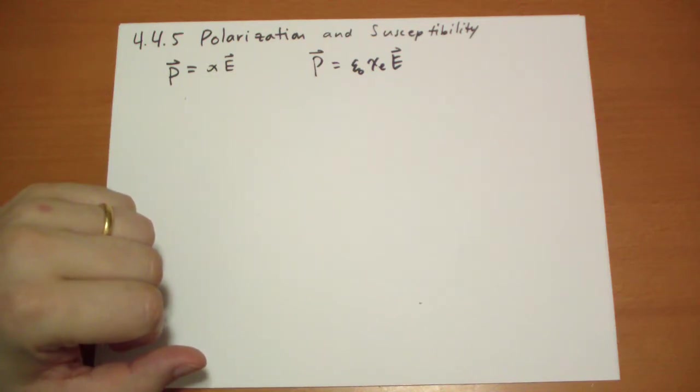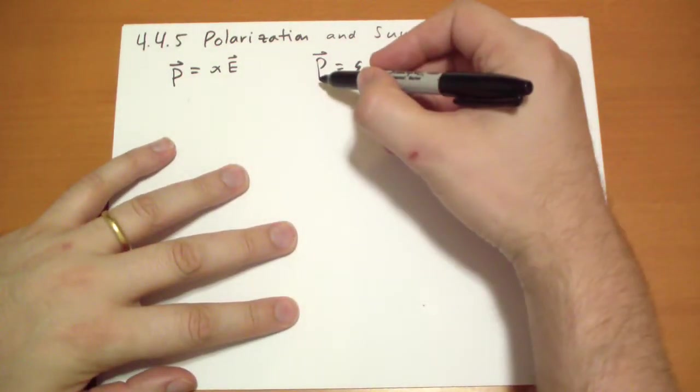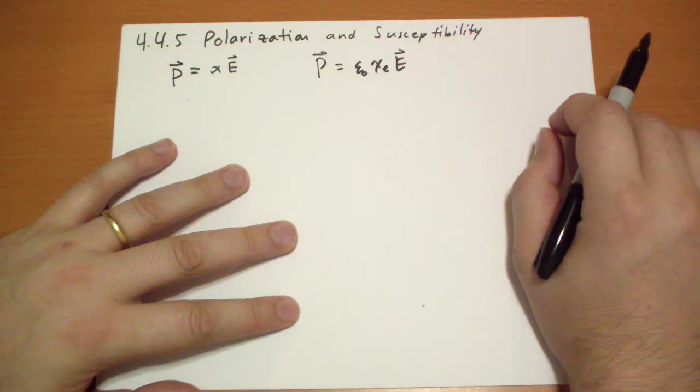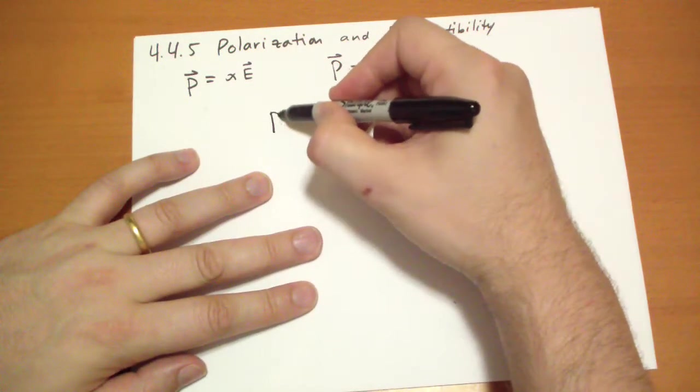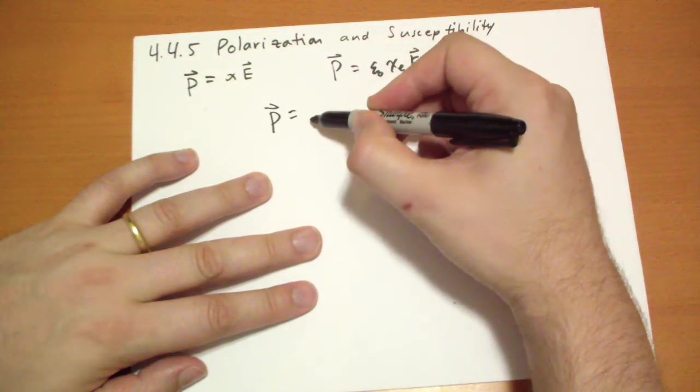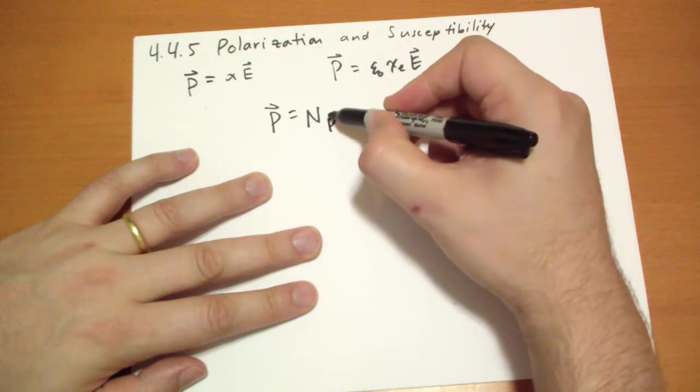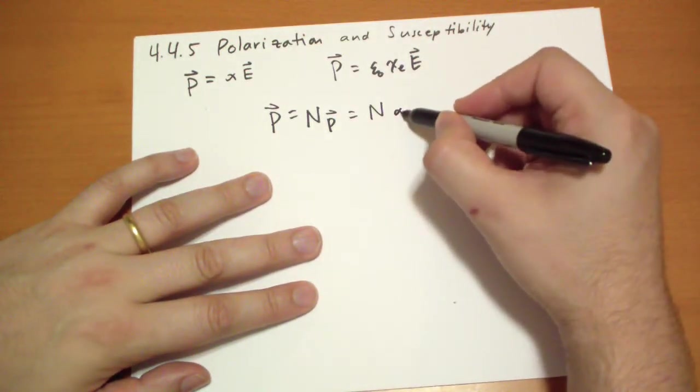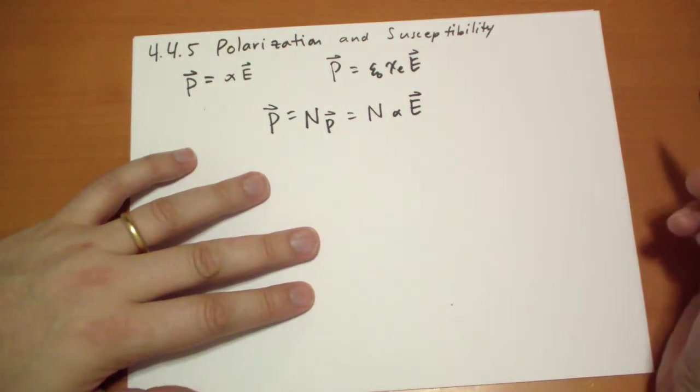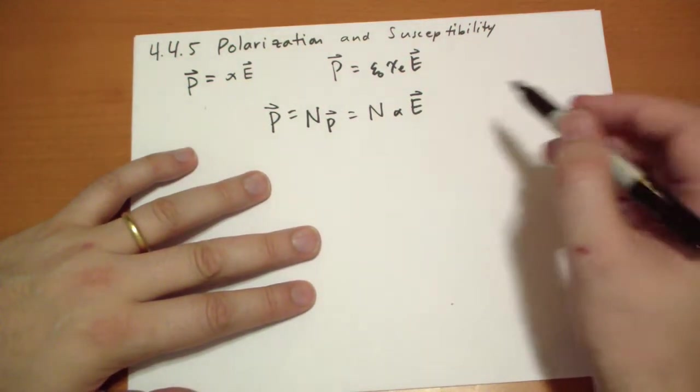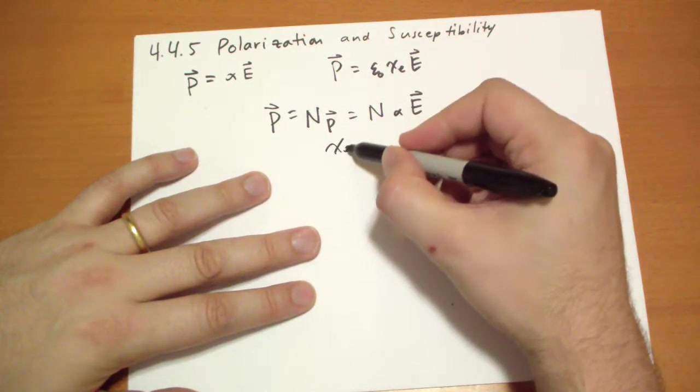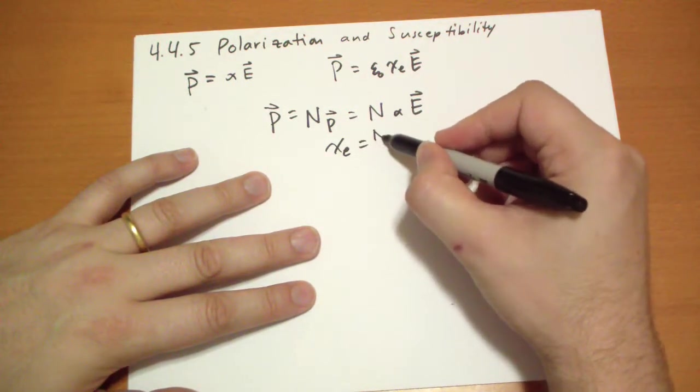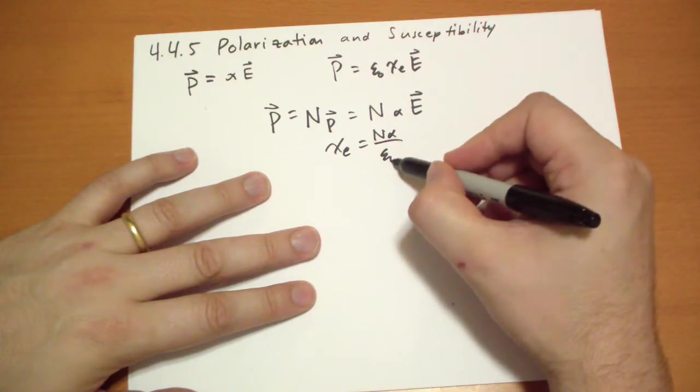So we can naively put this together to try to map this alpha to our constant susceptibility. We can say that the dipole moment per unit volume, P vector, is equal to the number of atoms times the dipole moment of each, which would give us N alpha times the electric field that the atoms are put into. So chi-e equals N alpha divided by epsilon-naught.